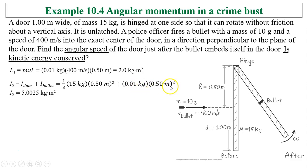So omega 2 equals L2 over I2 because I2 times omega 2 equals L2. But L2 equals L1, which is 2 divided by 5.0025. You'll have 0.4 radians per second. That is the angular speed immediately after the bullet is embedded in the door.